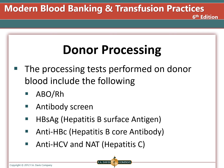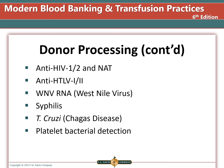Testing performed by a donor center includes ABO, Rh, antibody screen, hepatitis B surface antigen, hepatitis B core antibody, hepatitis C antibodies, and nucleic acid testing. Also included are HIV-1 and -2 antibodies and nucleic acid testing, anti-HTLV-1 and -2, West Nile virus RNA, syphilis, Chagas disease, and platelet bacterial detection.